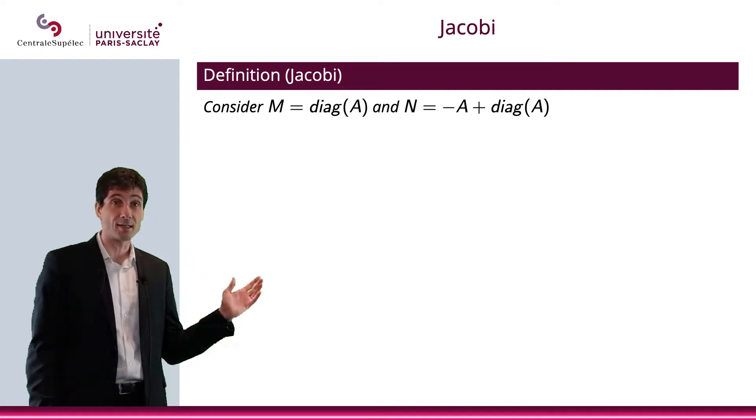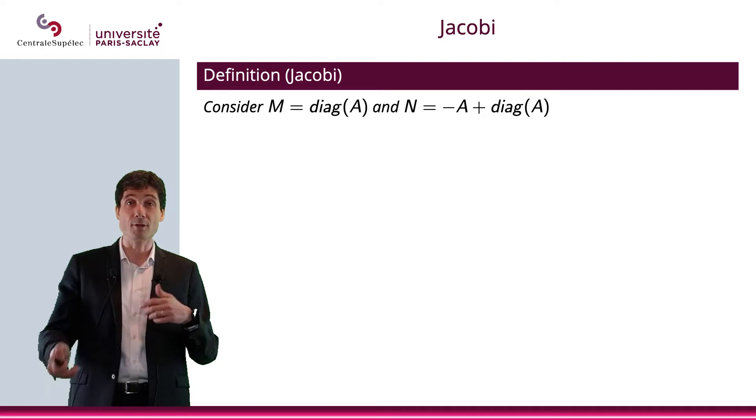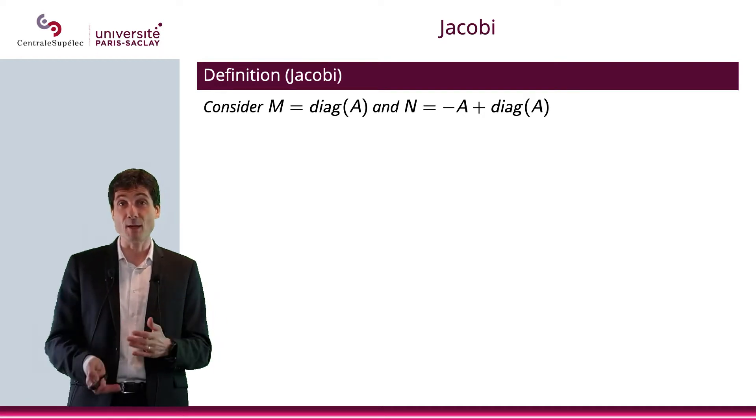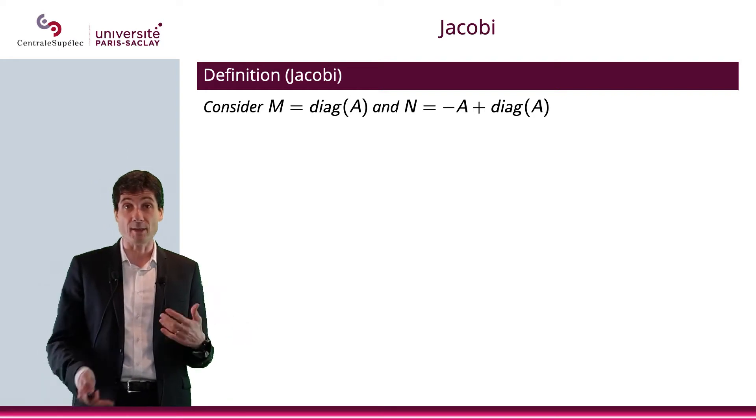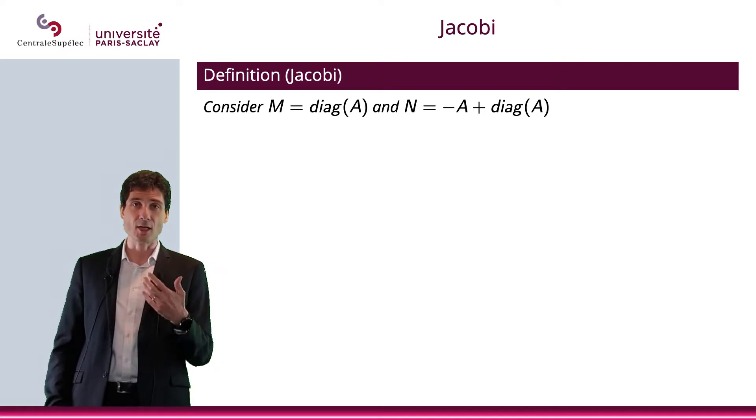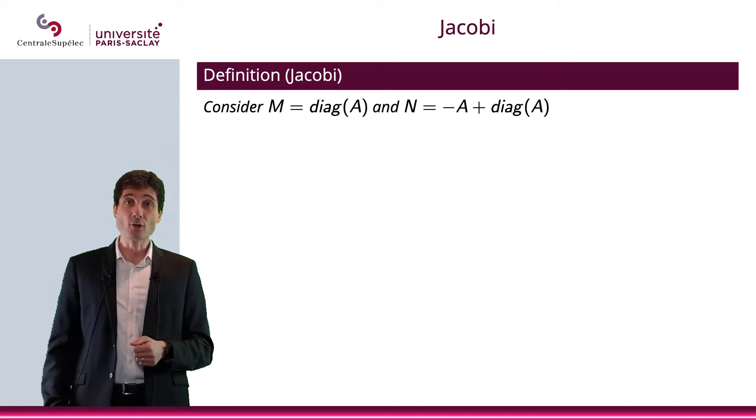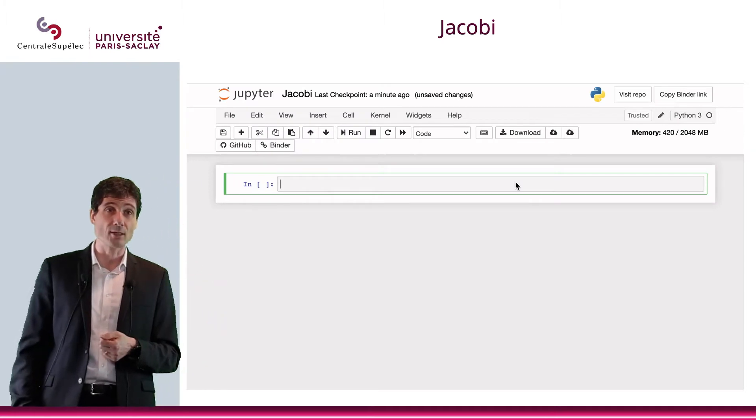Okay, so if you choose M like this and N like that, well, the first remark here is that solving Mx_{n+1} equals Nx_n plus b will be easy, because M is a diagonal matrix, so all you need to do is really, well, it's obviously extremely simple to define x_{n+1} at each iteration.